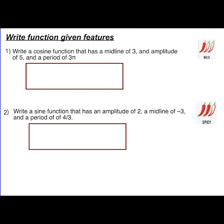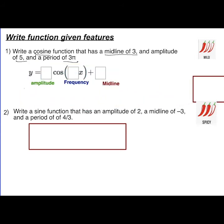This is level three — just a little bit spicier, but nothing you can't handle. Now we're also going to write the function given just the features, with no graph at all. Looking at this particular problem, we have the cosine function with a midline of three and an amplitude of five and a period of three pi.